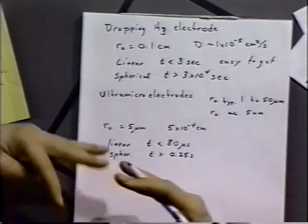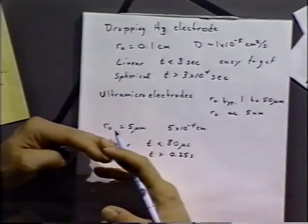You can see the vast difference when we make the electrode quite a bit smaller. Going from 0.1 centimeter to 5 times 10 to the minus 4 centimeters, we only see linear behavior at very short time scales, where spherical diffusion is quite easy to attain and would be the normal situation — we would see spherical-type or steady-state-type diffusion. That means we'd get a constant current characteristic of spherical-type diffusion.